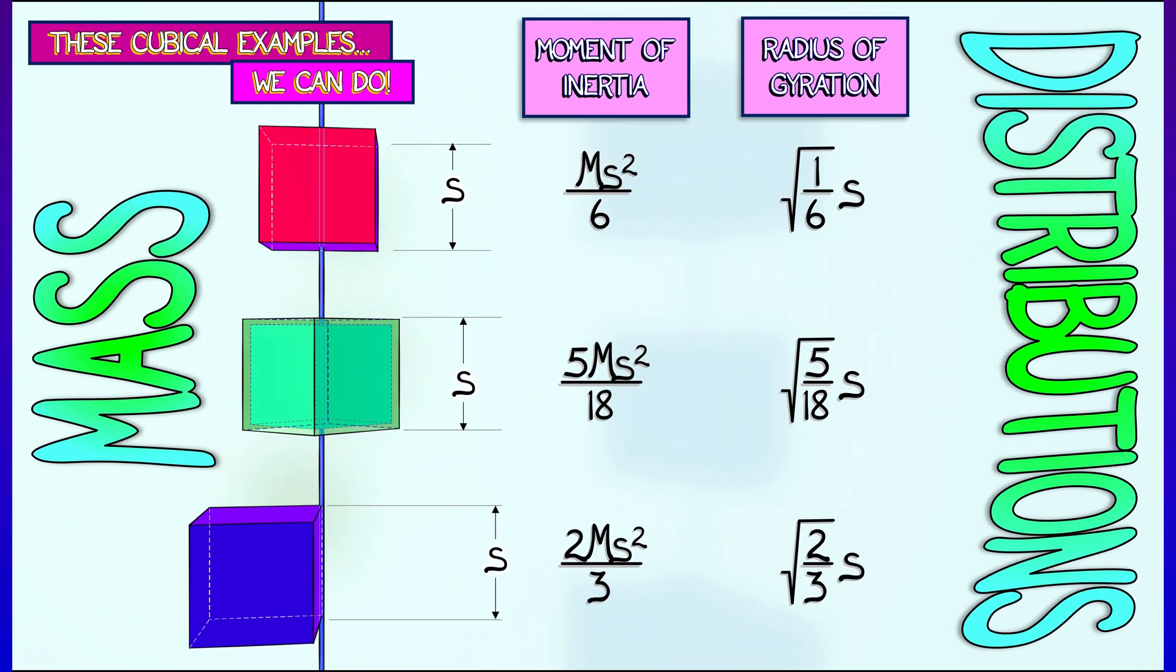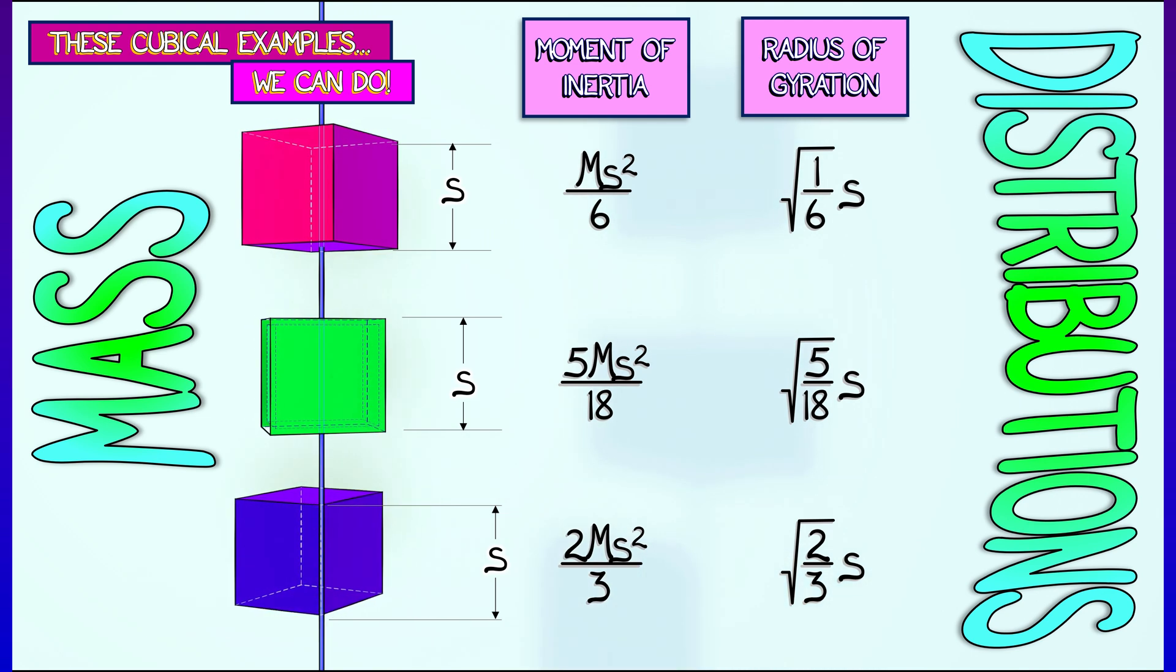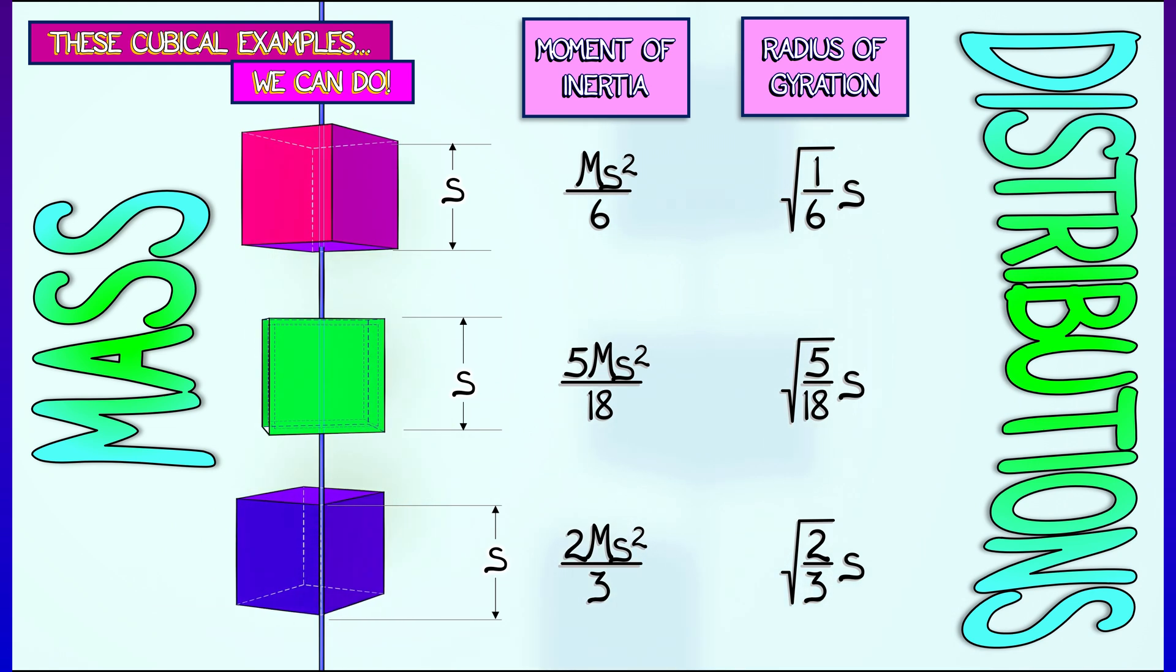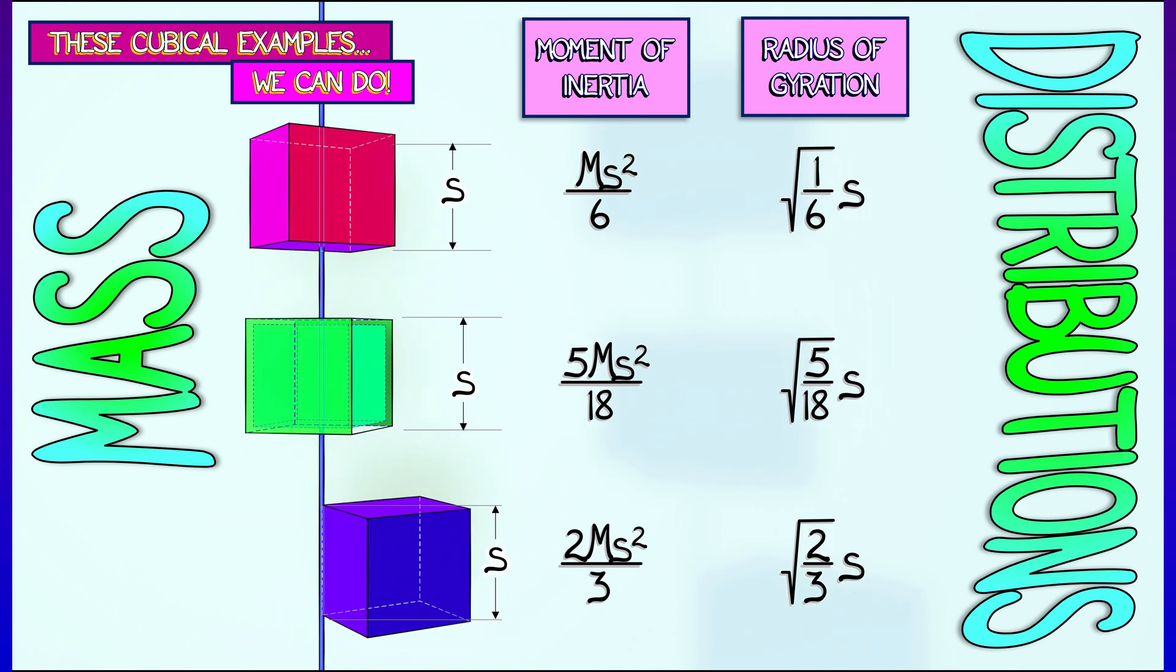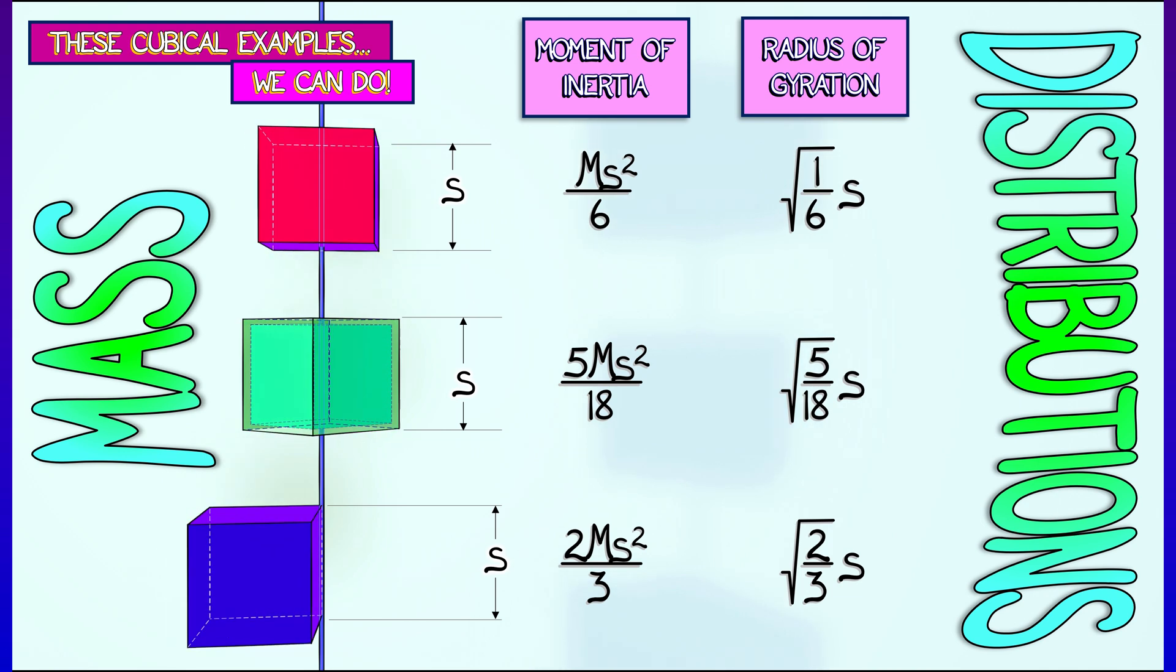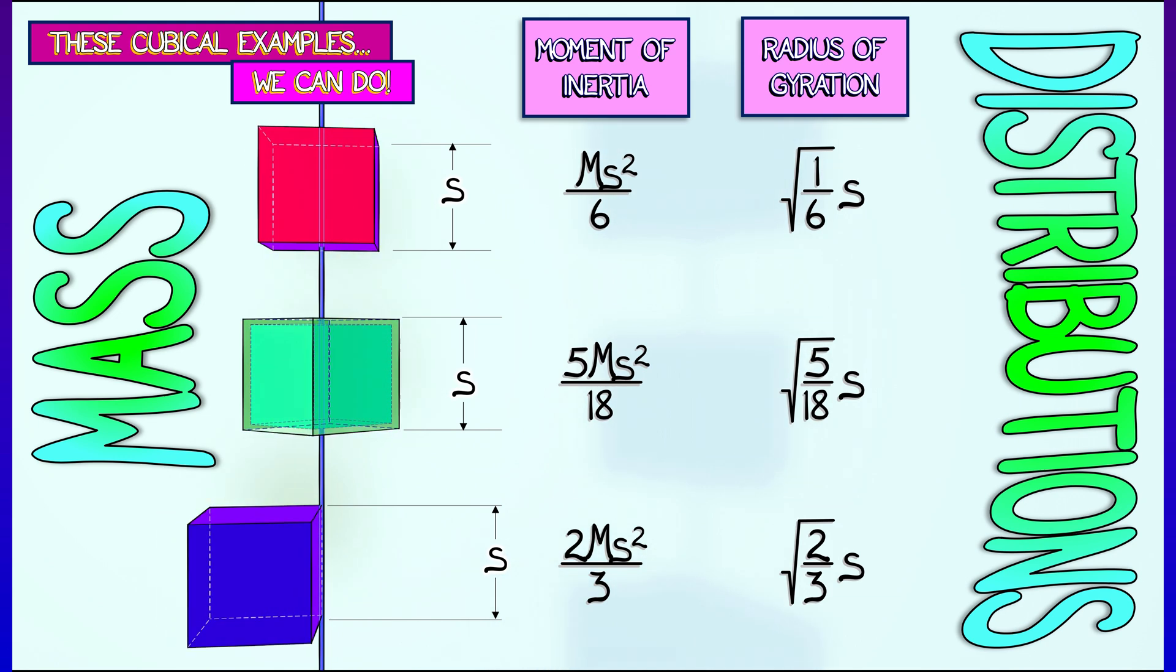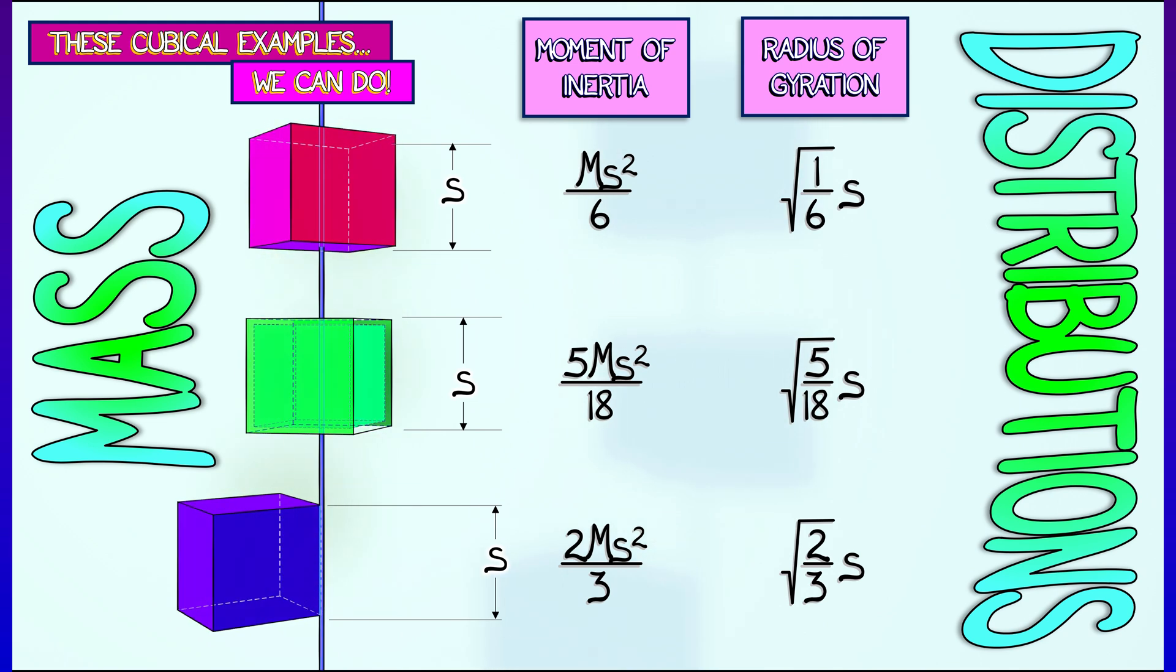Let's go back to the examples that we've done with cubes, either a solid cube of side length s or cubical shells. Then if you look at the way that we express the moment of inertia, writing this out in terms of, for example, with a solid cube through a central axis, it was M s squared over 6. Having that mass built in there makes it really easy to see the radius of gyration. Divide by M, then take the square root.